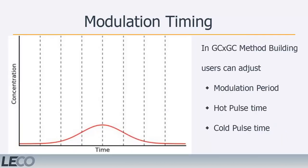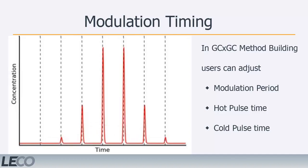Modulation period duration and pulse timing are often adjusted when developing a GC×GC method. When performed successfully, GC×GC experiments can transform a relatively small, broad chromatographic peak into several intense, narrow slices that represent numerous chromatographically resolved analytes.